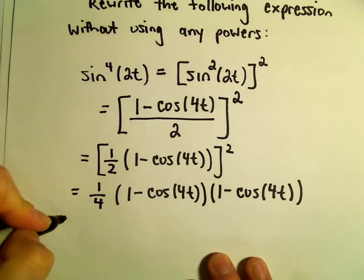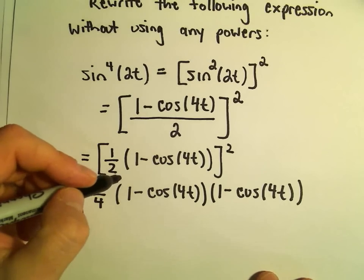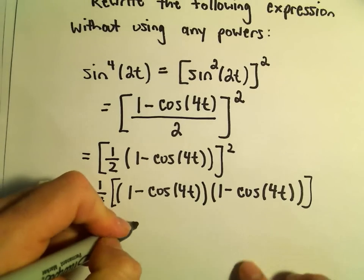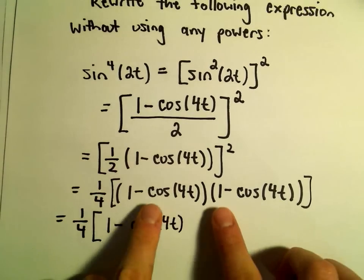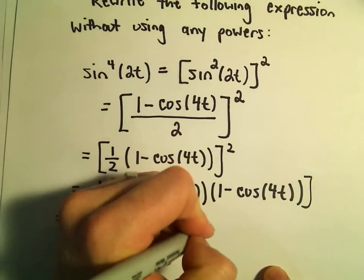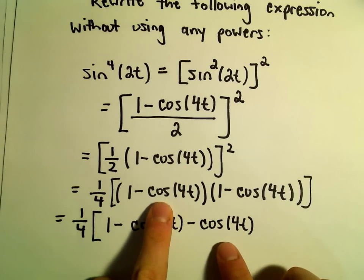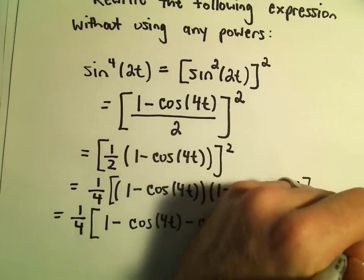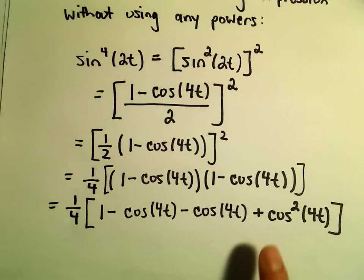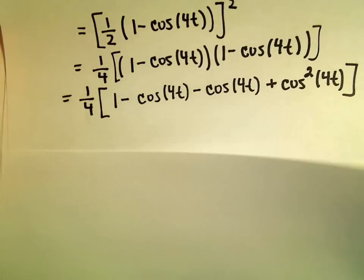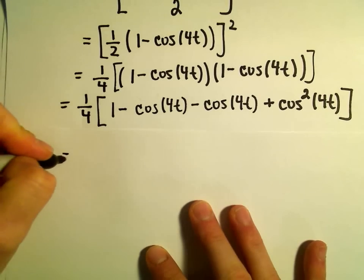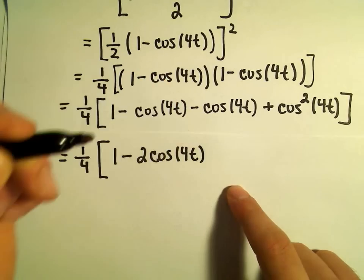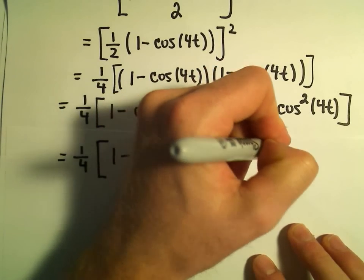Now we're just going to distribute. I'm going to leave the 1 fourth out front for a moment. So distributing: we get 1 times 1, or 1. We get a negative cosine 4t. On the inside we get another negative cosine 4t. And negative cosine 4t times negative cosine 4t gives us positive cosine squared of 4t. This simplifies to 1 fourth times 1 minus 2 cosine of 4t plus cosine squared of 4t.